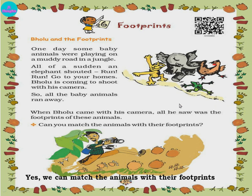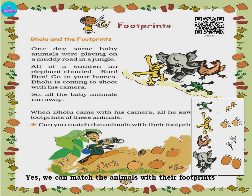An elephant will have a big footprint, so the big footprint belongs to the elephant. Chicks will be small. For example, this is the frog's footprint, this is the cat's, this is the hen's footprint, and the elephant's footprints are big.